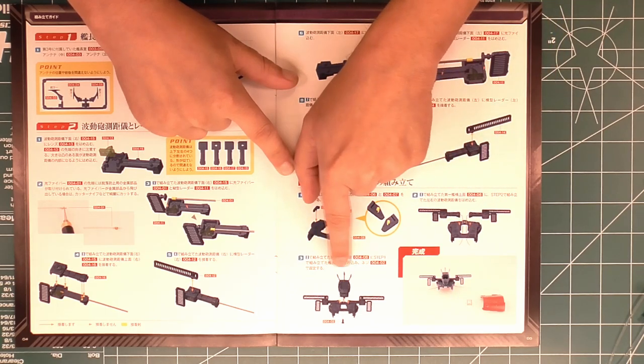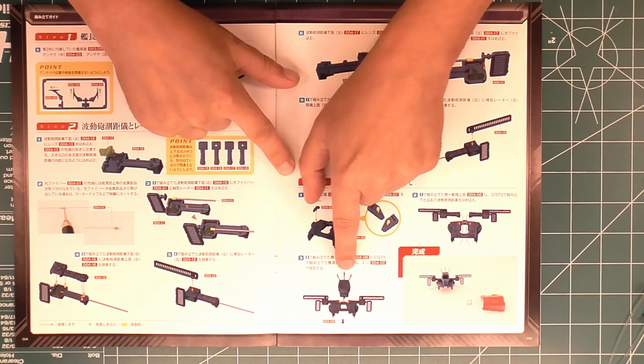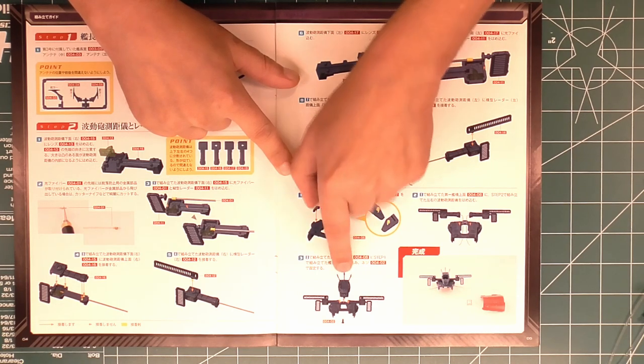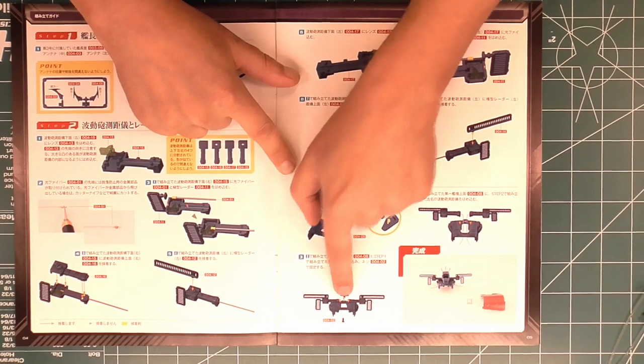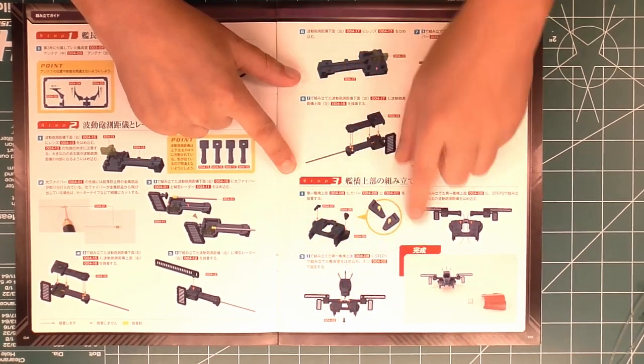And then thread them through. Thread the fiber through, glue these down on top, and then take this captain's quarters, I believe it is, or his ready room. Put that down, put a screw in it, and we're done.